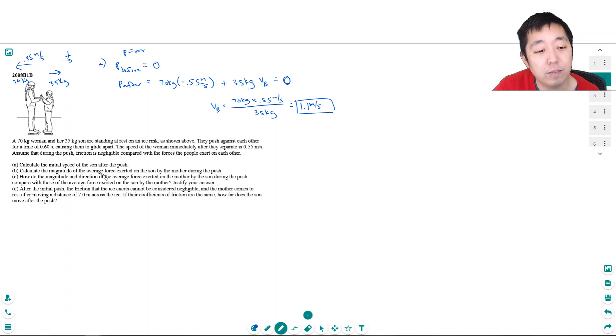Calculate the magnitude of the average force exerted by the son on the mother during the push. So what's going to happen is there's a force here and a force here. They're pushing on each other, so each is having a force exerted on themselves.